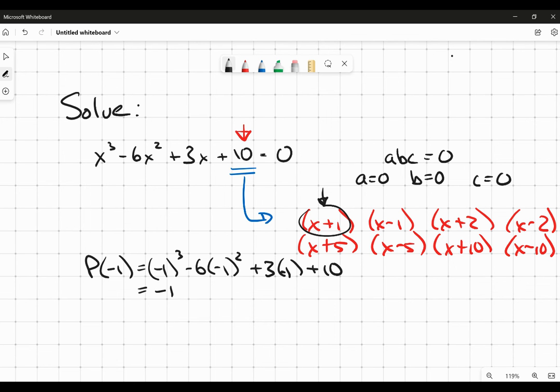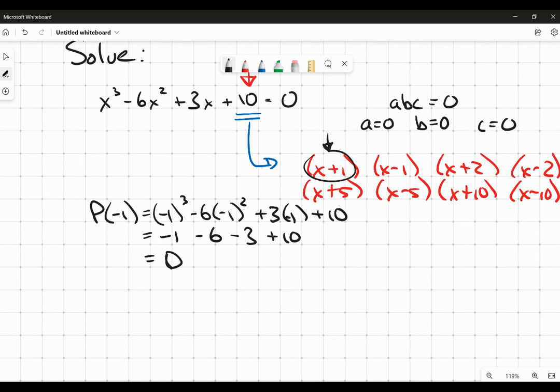If you plug negative 1, it's going to be negative 1 minus 6, because the negative 1 squared becomes positive 1, minus 3 plus 10. And it turns out that does, in fact, equal 0. So I know that x plus 1 must be a factor, because when I plugged the negative 1 into that, it made the whole thing equal to 0.